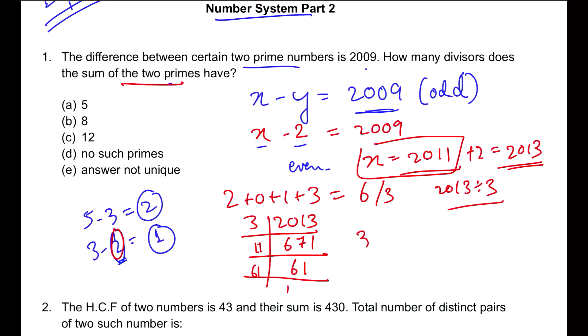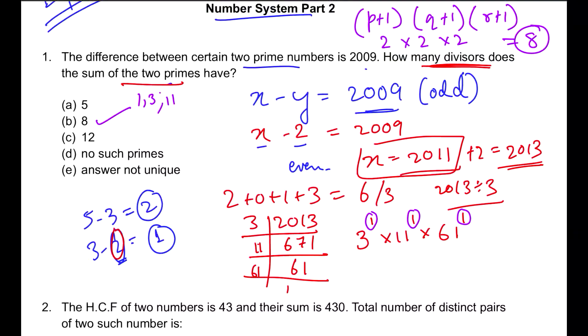Why did I do prime factorization? Because if I keep the powers like this, I can find out the total divisors. Last video, I told you the total divisor formula: P+1 times Q+1 times R+1, where P, Q, R are the powers of the prime numbers. Here the powers are 1, 1, 1, so it will be 2×2×2 which means 8 total divisors. The divisors are 1, 3, 11, 33, 61, 183, 671, and 2013.